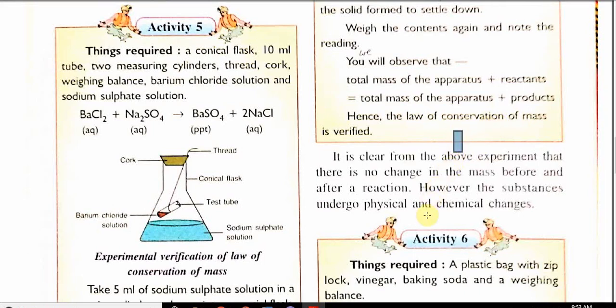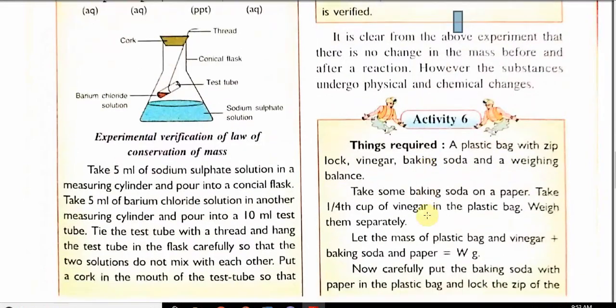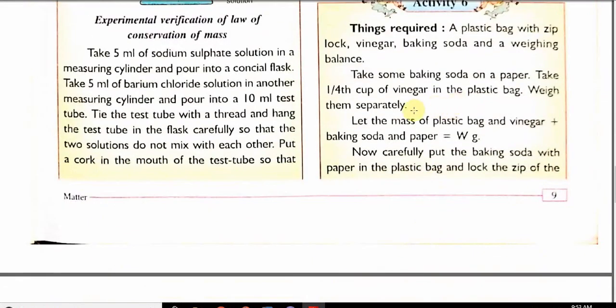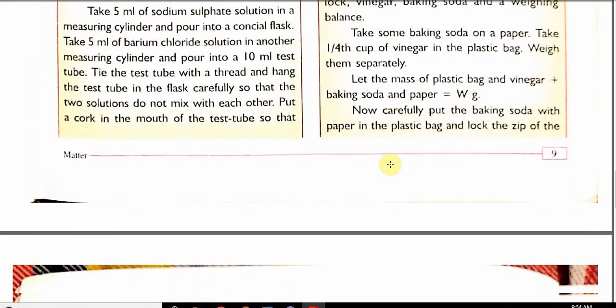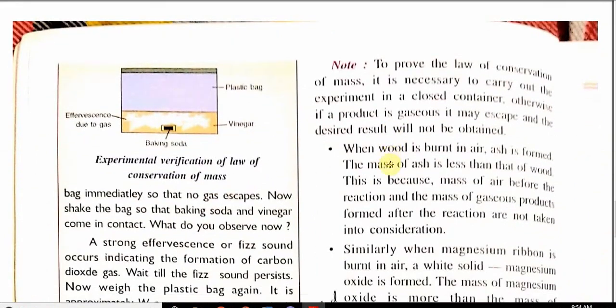Let us see activity number six. How chemical and physical change take place. Things required: plastic bag with zip lock, vinegar, baking soda and a balance. Take some baking soda on a paper. Take one fourth cup of vinegar in plastic bag. Weigh them separately. Let us assume some variables for that. Let the mass of plastic bag and vinegar plus baking soda plus paper be W gram.